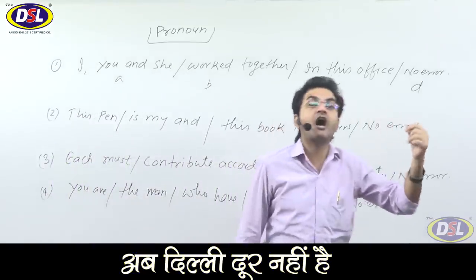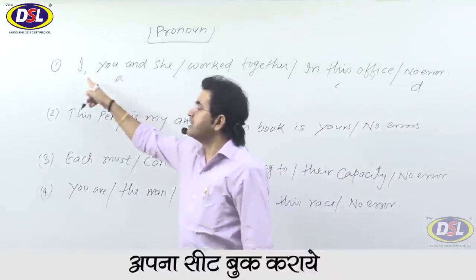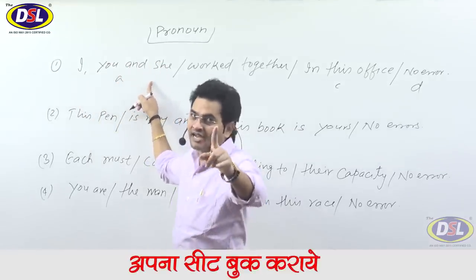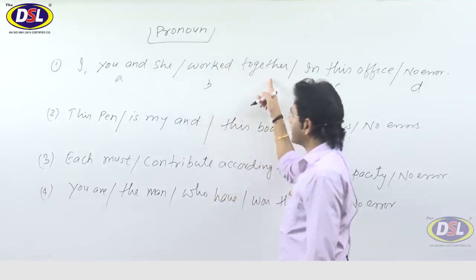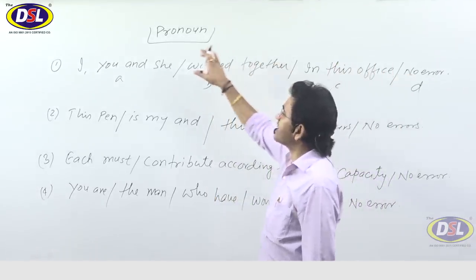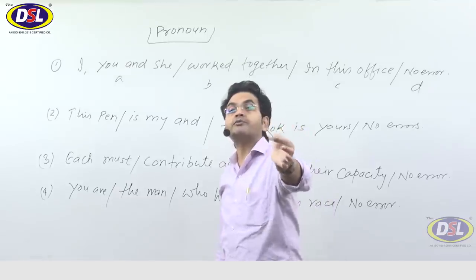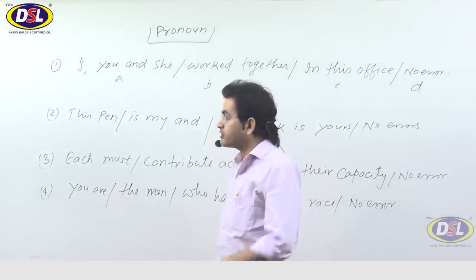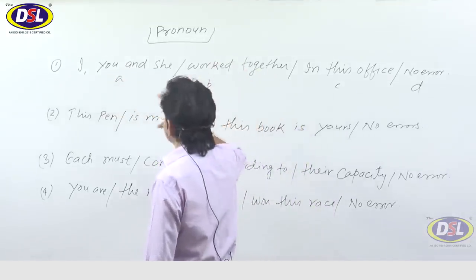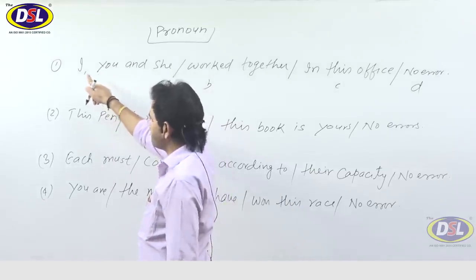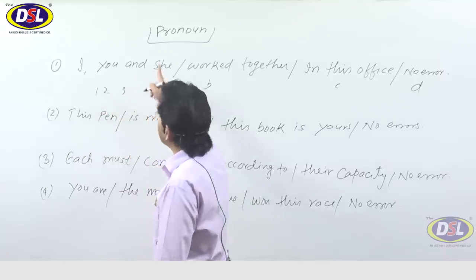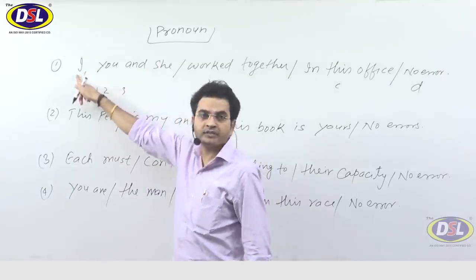Where is the use of pronoun? Now look — 'I' is a pronoun, 'you' is a pronoun, 'she' is a pronoun. We have worked together in this office — this is all part of the verb. The error is in the pronoun, so we check the pronoun. We have to focus on I, you, and she. There are three persons: first person, second person, third person.